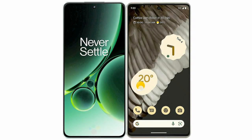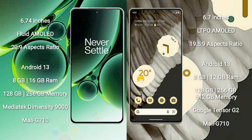I will compare the new OnePlus Nord 3 with Google Pixel 7 Pro. OnePlus Nord 3 comes with a 6.74-inch flat AMOLED display with a 20:9 aspect ratio. Google Pixel 7 Pro comes with a 6.7-inch LTPO AMOLED display with a 19.5:9 aspect ratio.